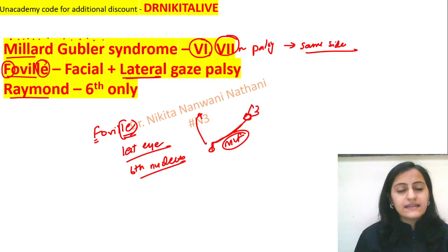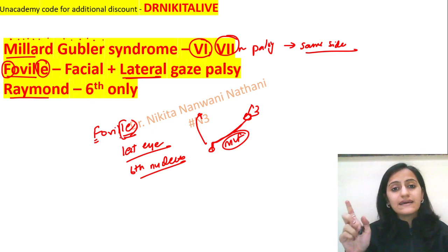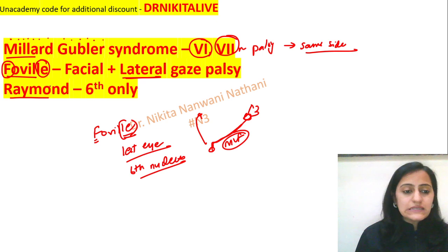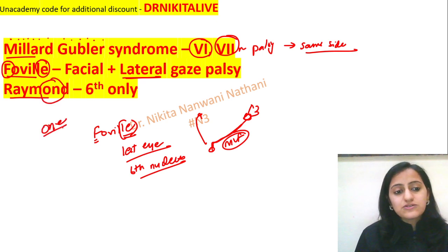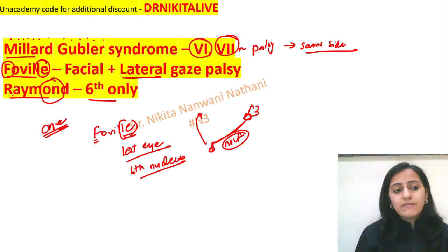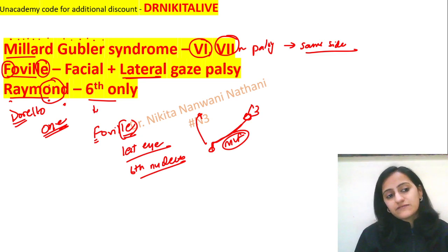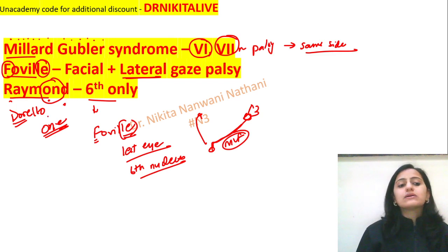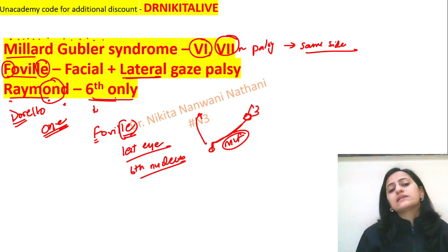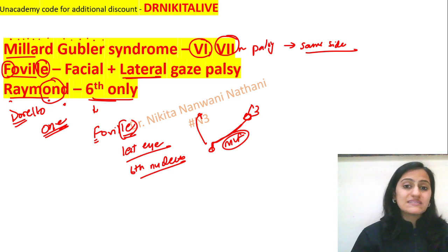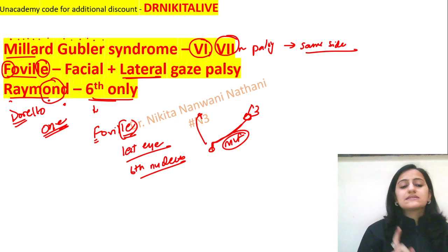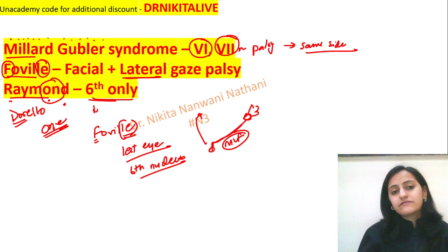Remember Foville is F and LE — facial and lateral eye, meaning horizontal gaze palsy. For Raymond syndrome, the trick is 'O-N' — only one cranial nerve is affected, and it is the sixth only. Remember Raymond contains the letters D-O-R, like the dorsolateral canal, and the cranial nerve going through the dorsolateral canal is the sixth nerve. So in Raymond syndrome, only the sixth nerve is affected. This is different from Raymond-Cestan syndrome.